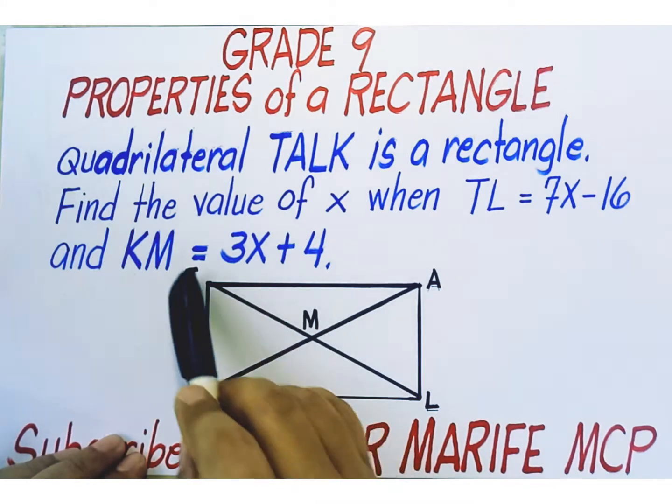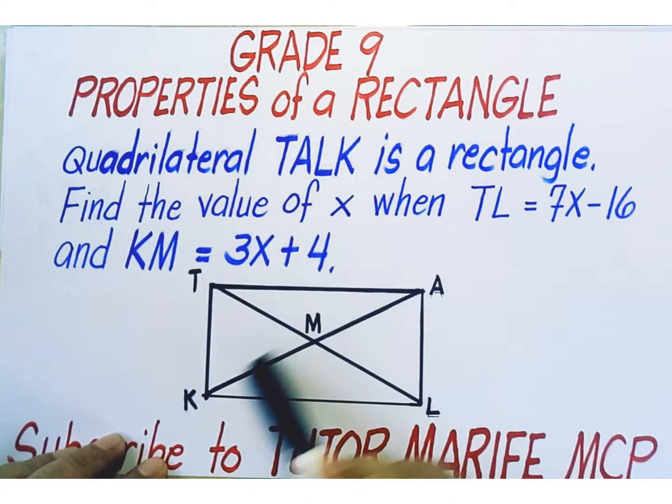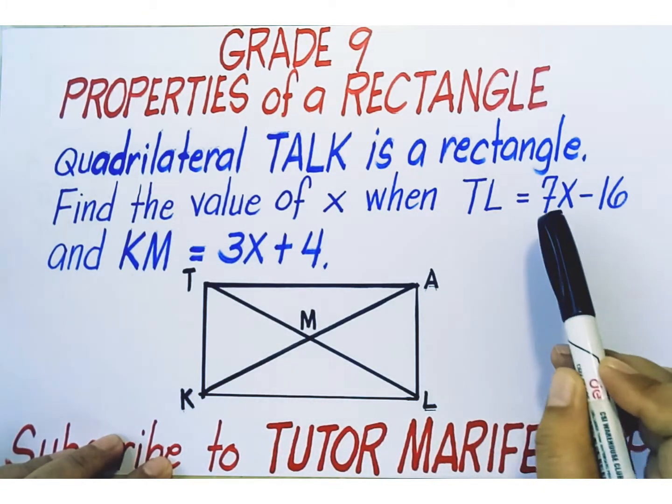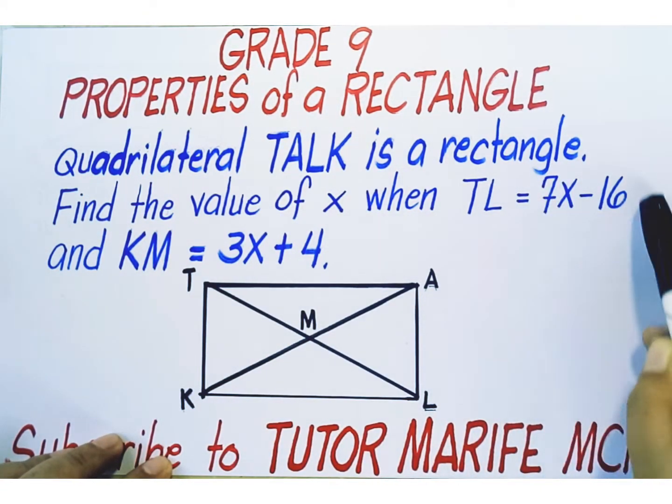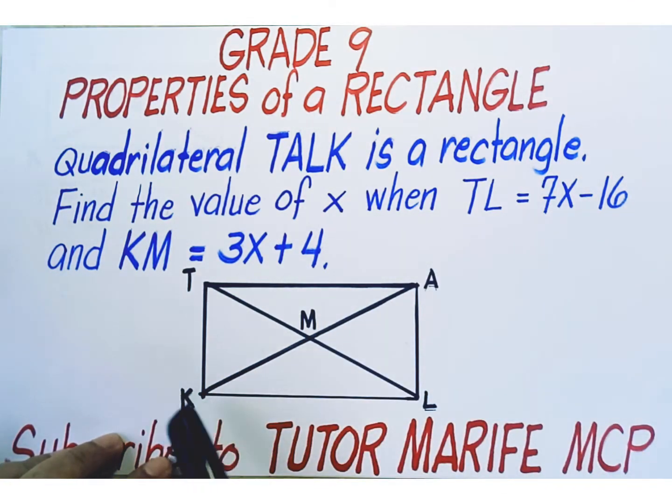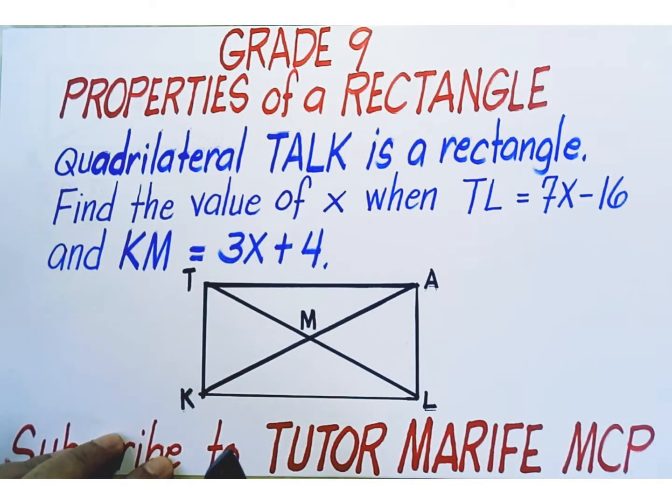We have here two diagonals, diagonal TL and diagonal AK. The length of diagonal TL is represented as 7x minus 16. Half of diagonal AK, which is line segment KM, has length 3x plus 4.